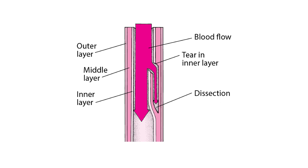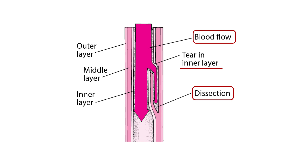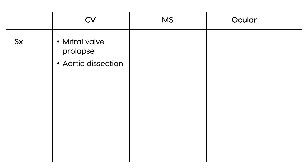Here is a diagram of aortic dissection to explain. This is a diagram of a blood vessel, and this points to the blood flowing. There's a tear in the inner wall of this blood vessel, and as a result that tear eventually leads to dissection. The blood, instead of going down the lumen, can go into that tear. So those are the two big ones for cardiovascular.